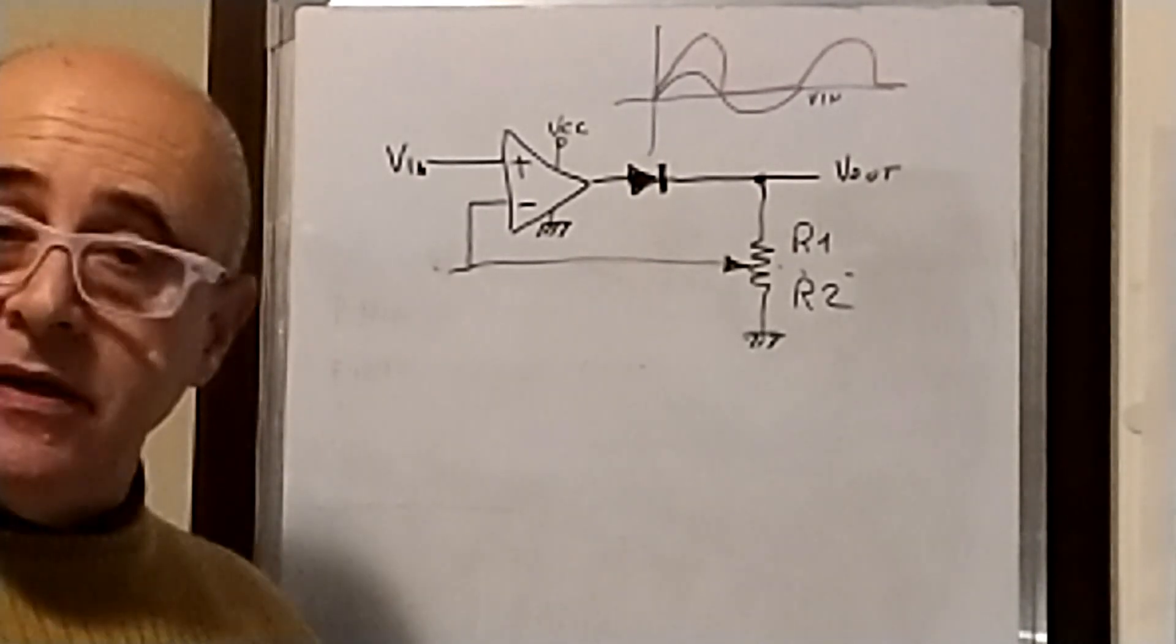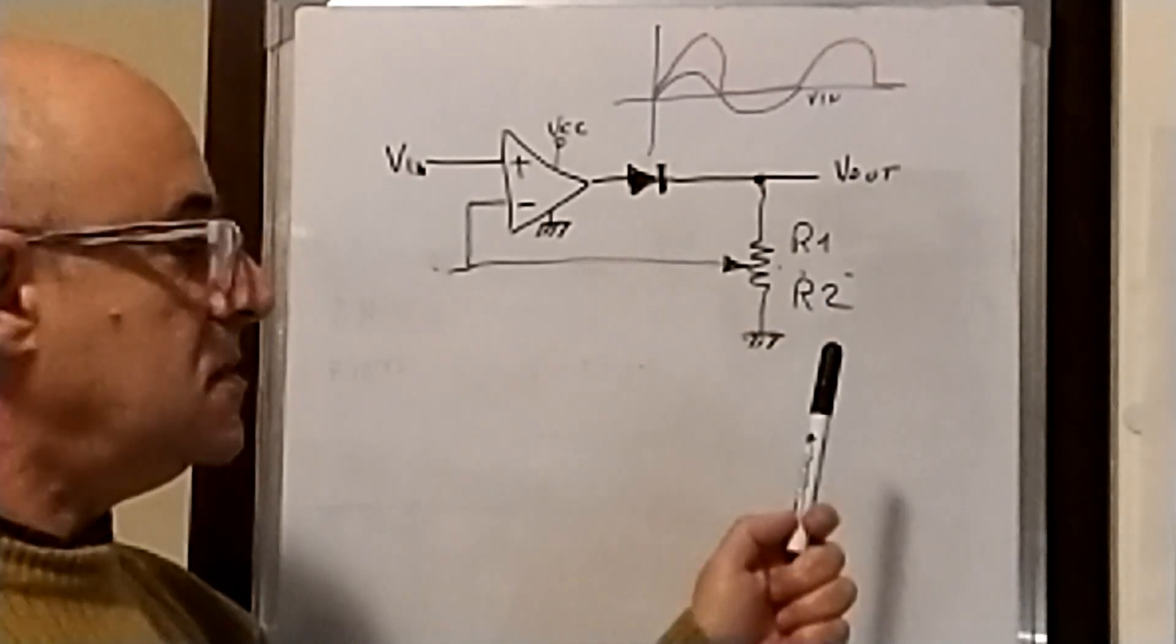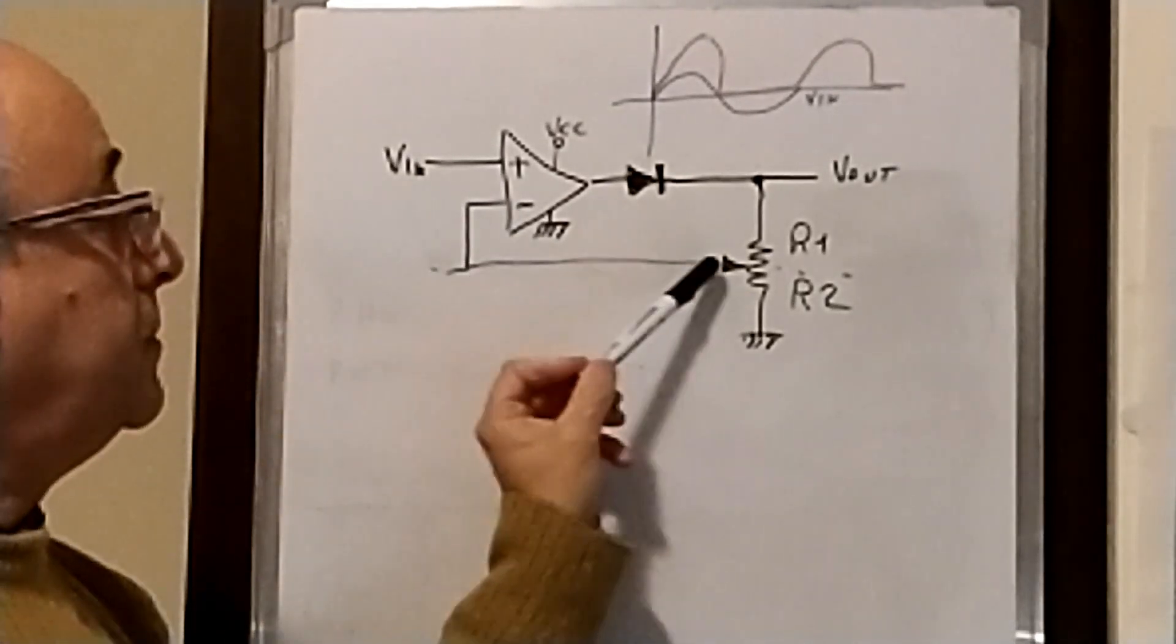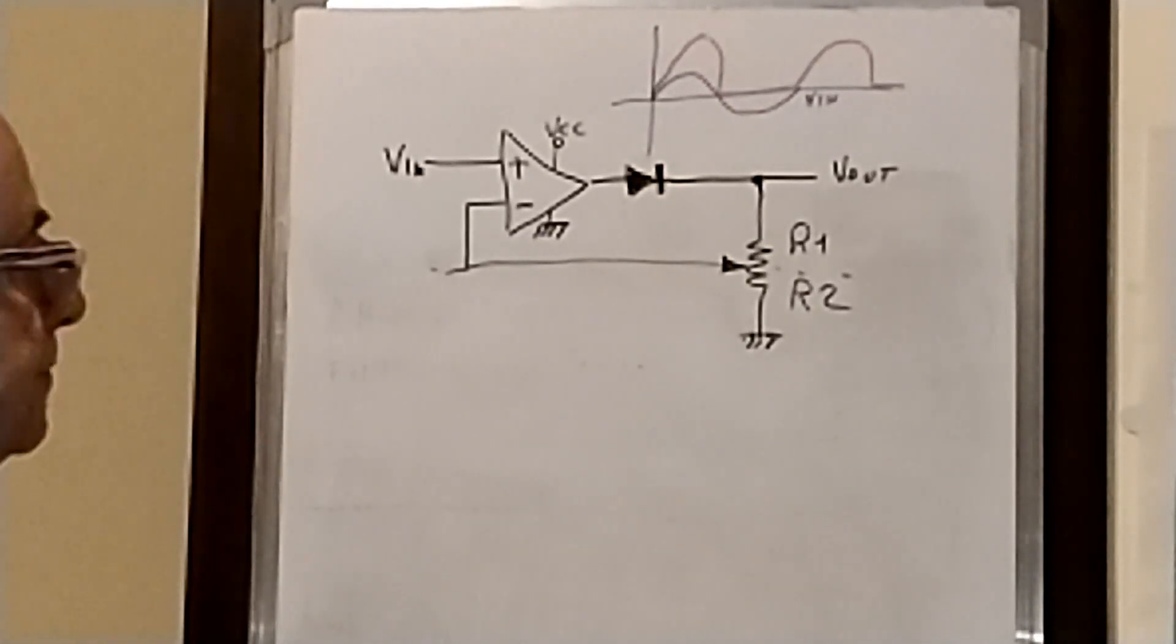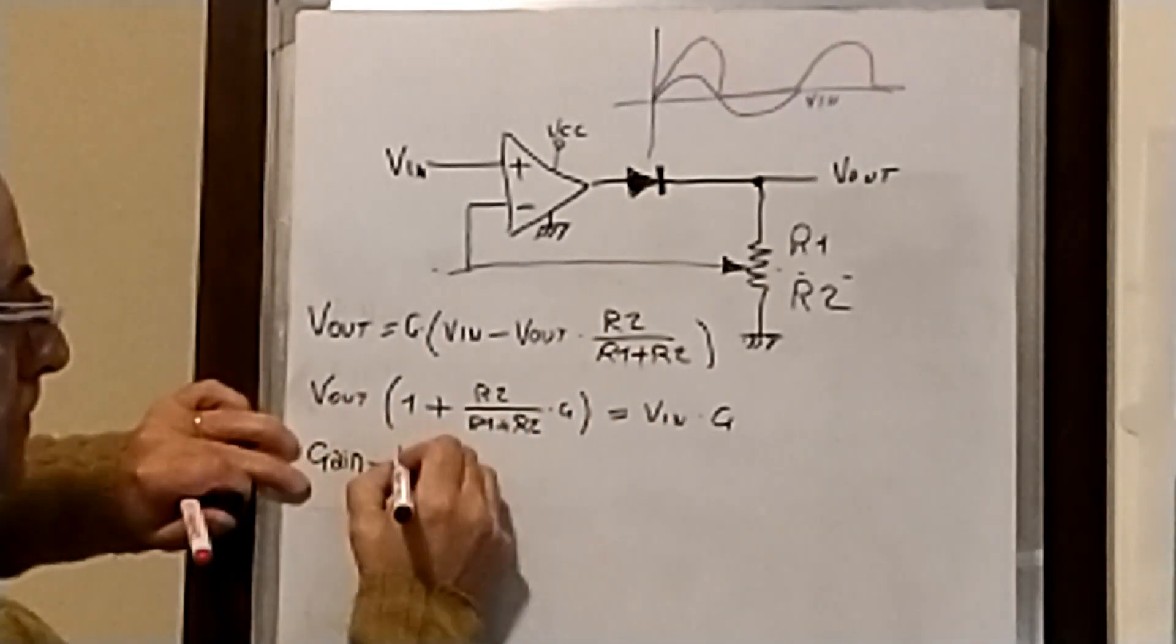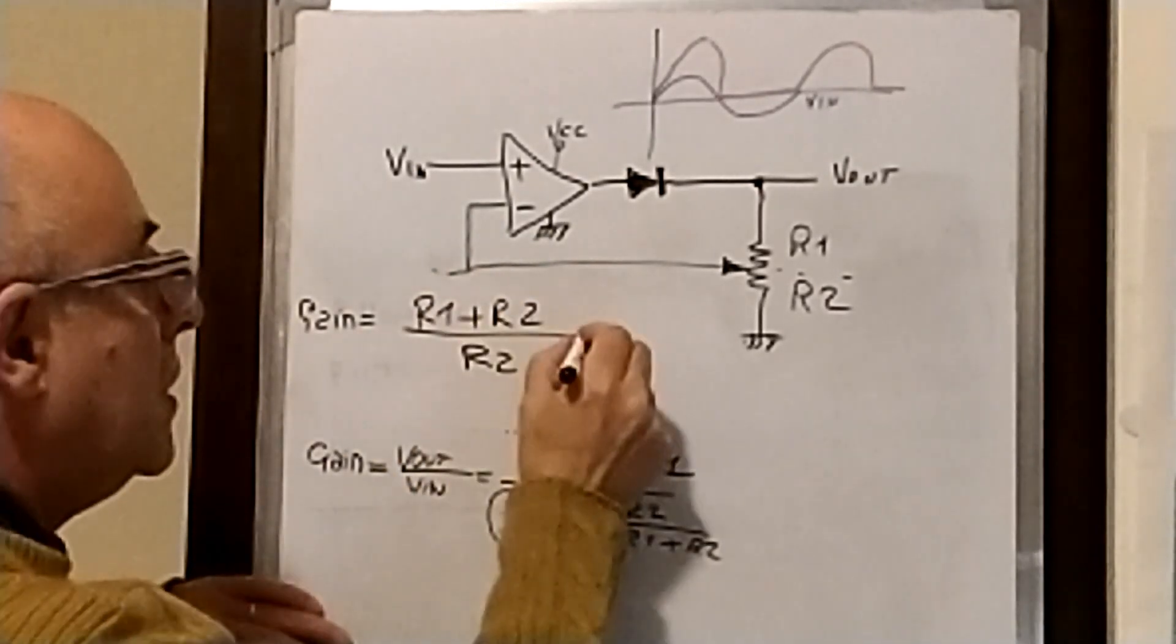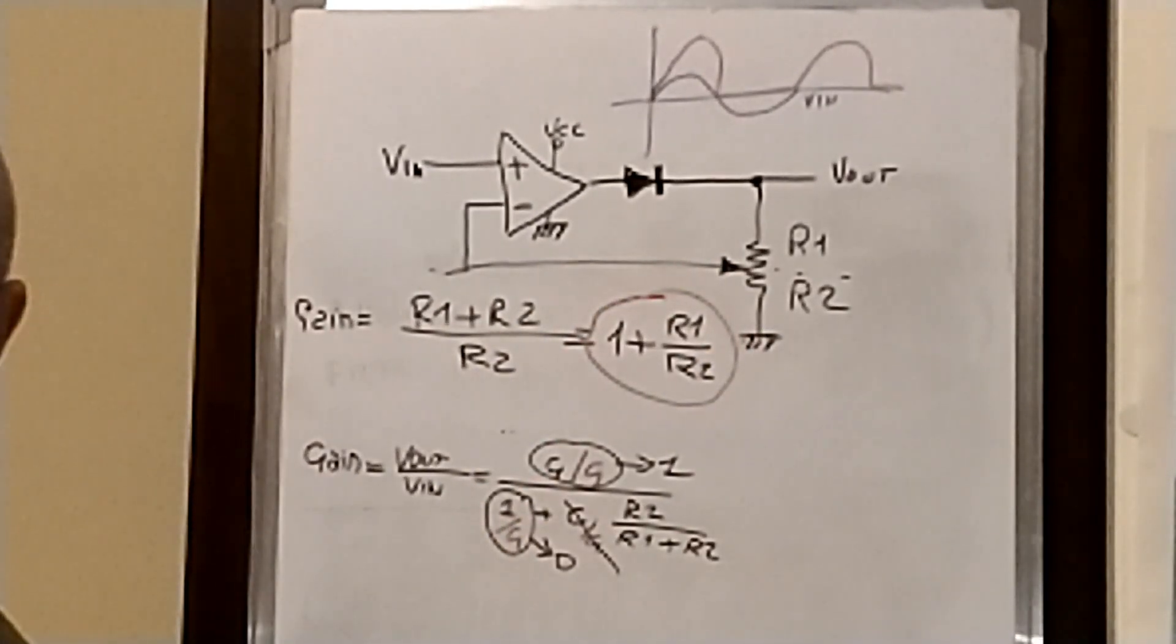We have the second modification. We inserted a trimmer here between the output and the ground. This is a voltage divider that can be seen as two resistors, R1 and R2, on the two sides of the trimmer. And the negative reference for the amplifier is kept from the middle point of the trimmer. So how does the formula change?